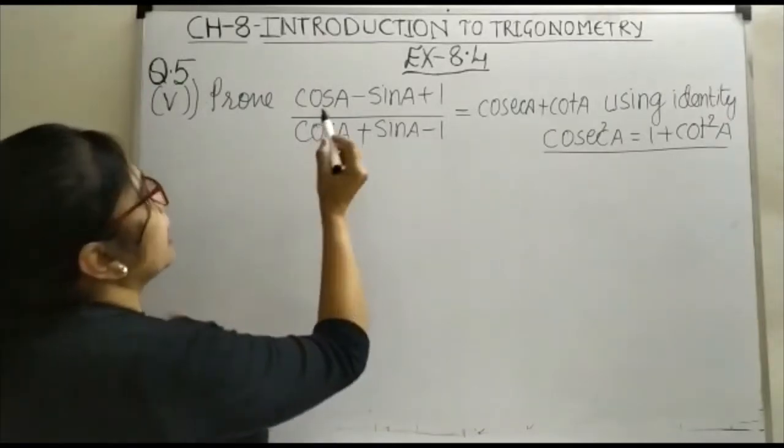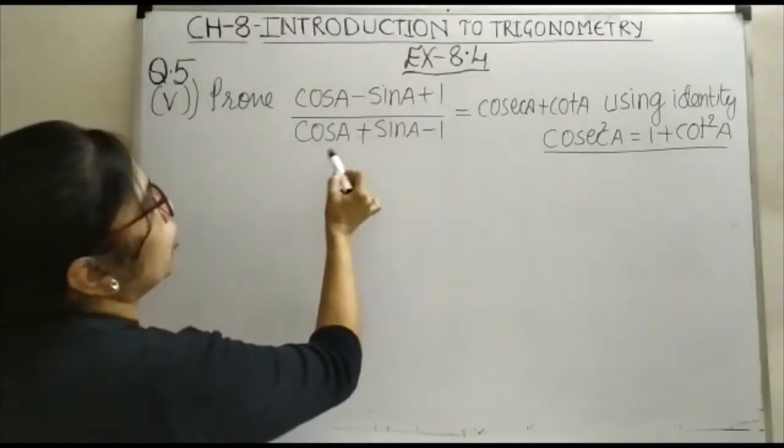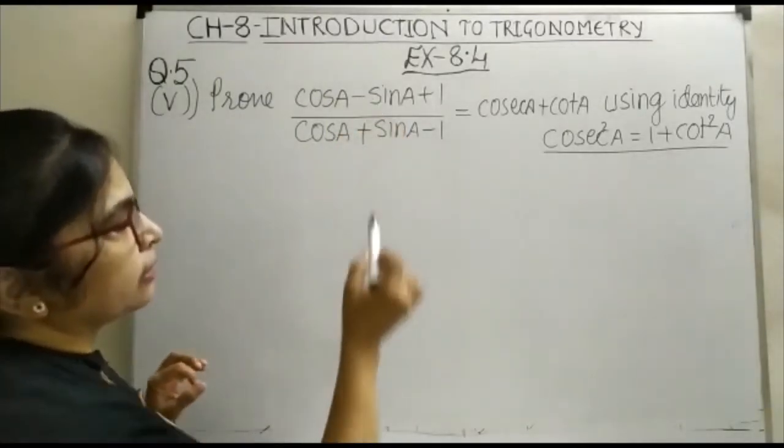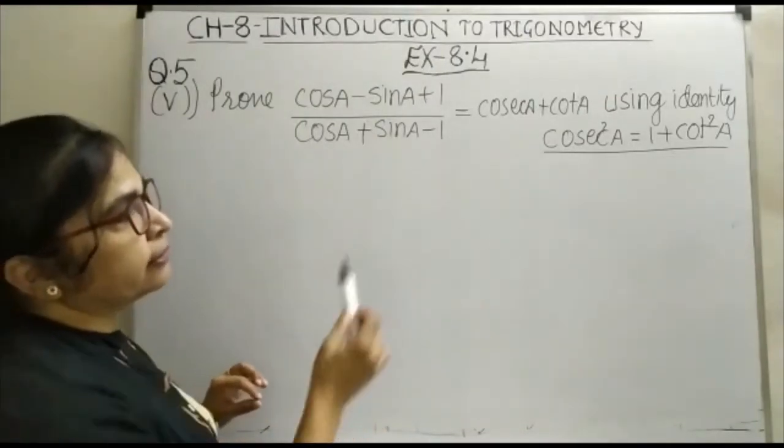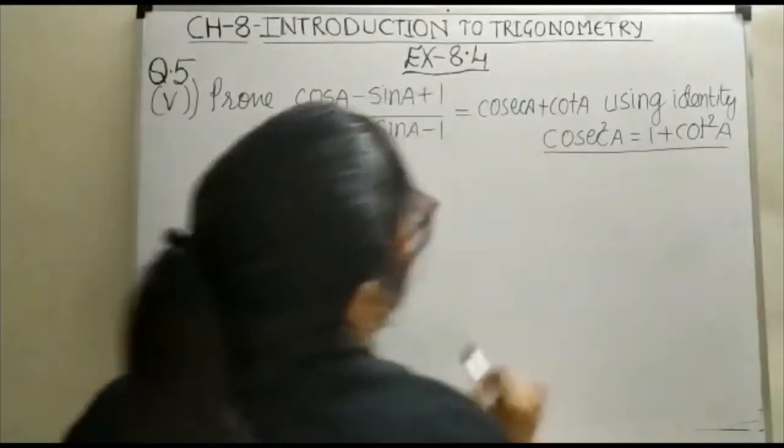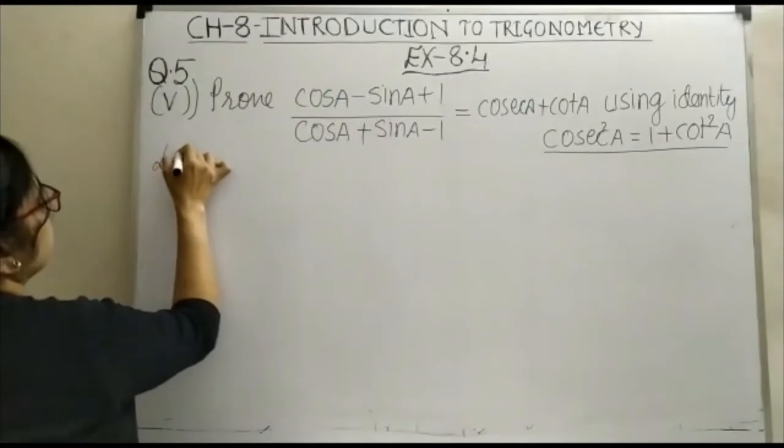Let us see here, it is given that prove cosA minus sinA plus 1 upon cosA plus sinA minus 1 is equal to cosecA plus cotA. We have to use the identity cosec square A is equal to 1 plus cot square A. So, let us begin from the left hand side.